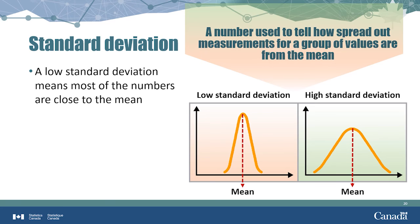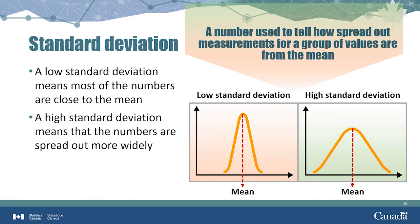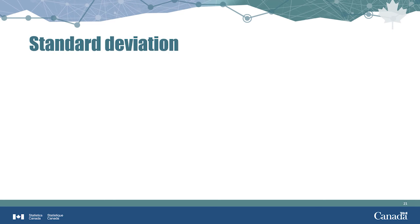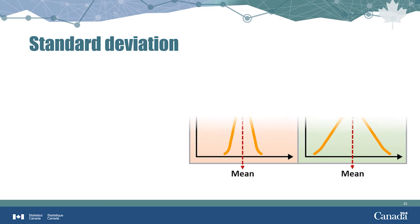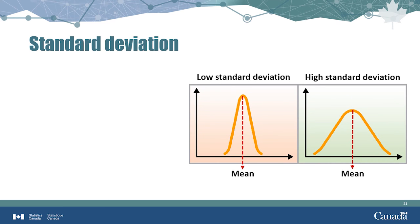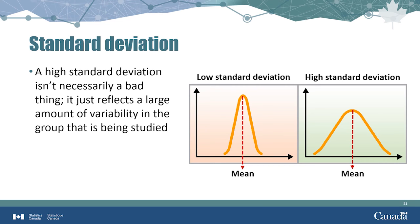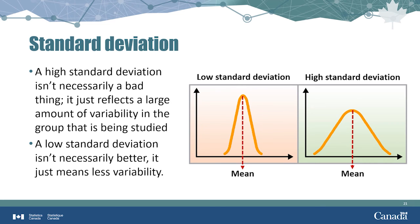A low standard deviation means most numbers are close to the mean. In a classroom context, a low standard deviation tells the teacher that most students are performing at around the same level, while a high standard deviation indicates not everyone is. A high standard deviation isn't necessarily a bad thing — it just reflects a large amount of variability. For example, looking at all salaries within a large company from co-op students to the CEO, the standard deviation may be very high, while narrowing to just co-op students gives a lower standard deviation because their salaries are more similar.